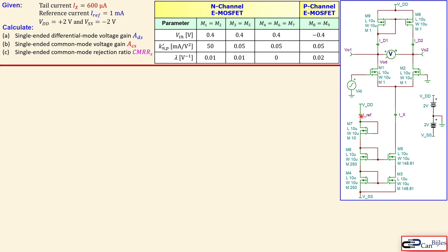We have a total of five transistors to create this cascode current source — all of them are N-channel enhancement type MOSFETs. The differential pair is created by M1 and M2, also N-channel enhancement MOSFETs. The active load is created by M8 and M9, which are P-channel enhancement type MOSFETs.